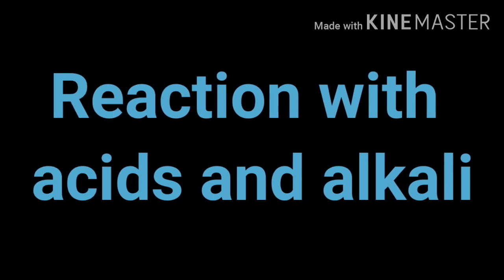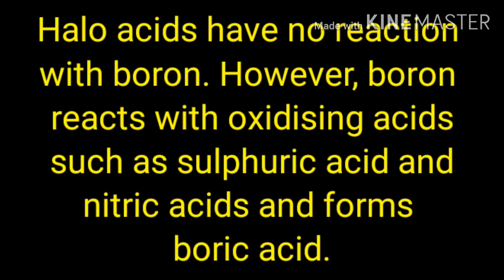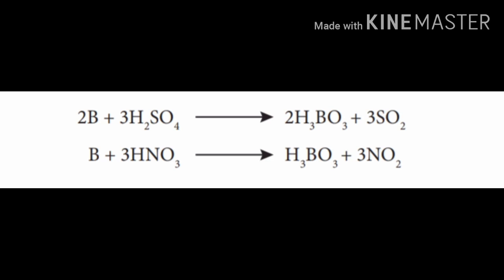The next reaction of boron is reaction with acids and alkalis. Haloacids have no reaction with boron — haloacids means hydrochloric acid, hydrofluoric acid, and similar acids. However, boron reacts with sulfuric acid and nitric acid to form boric acid. For example: boron plus sulfuric acid (H2SO4) gives boric acid (H3BO3) plus sulfur dioxide.